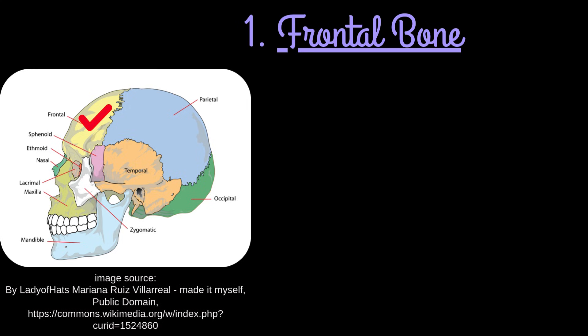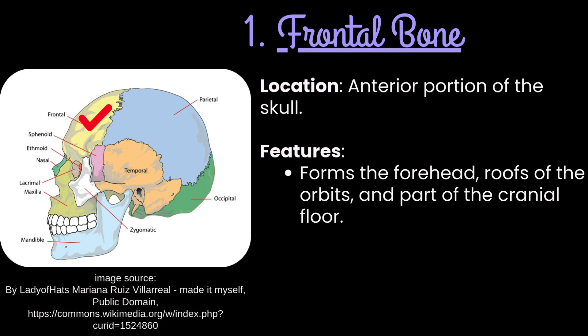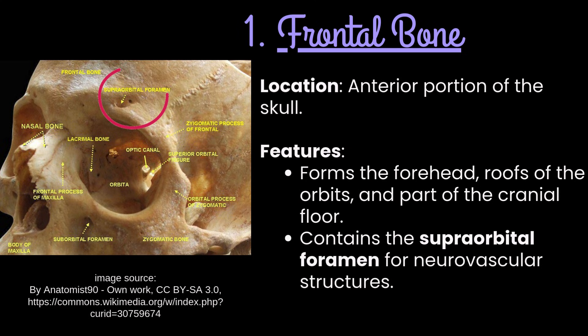Number 1: Frontal bone. It forms the anterior portion of the skull. It forms the forehead, root of the orbits, and part of the cranial floor. It contains the supraorbital foramen for neurovascular structures.